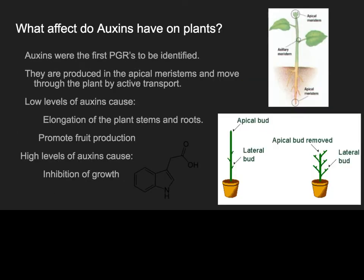First we're going to talk about auxins, which are growth stimulators. Naturally, they are produced in the apical meristems — the area at the top of the plant where lots of new growth is occurring. When they are produced there, they move through the plant through the process of active transport, which means it takes energy. So from the apical meristem, some of it goes to the leaves, down the stem, and maybe down into the roots. There is also an apical meristem at the bottom — a lot of plants grow at both ends.